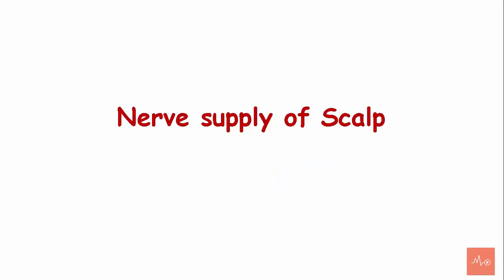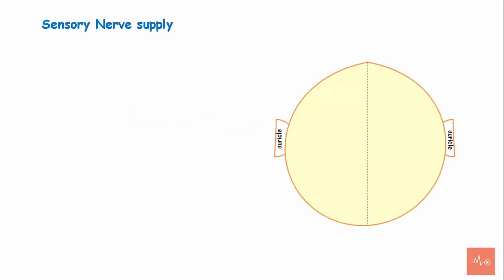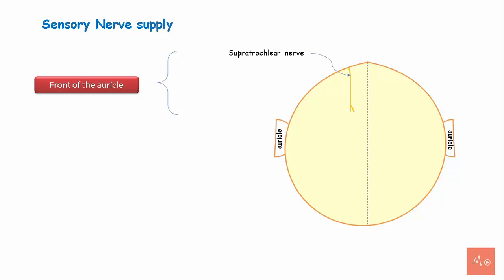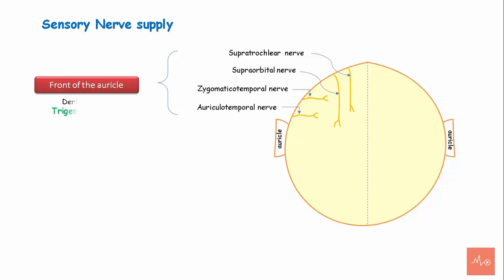In front of the auricle, the scalp receives nerve supply from the supratrochlear, supraorbital, zygomaticotemporal, and auriculotemporal nerves. These are derived from the trigeminal nerve.